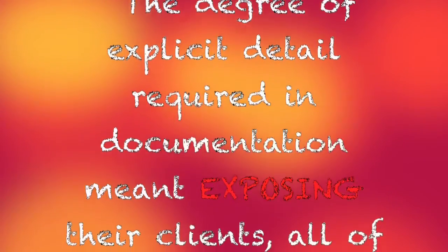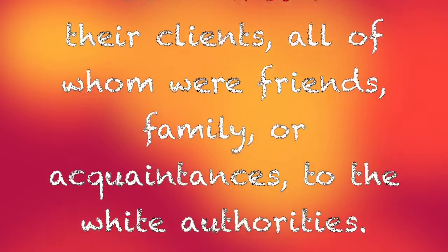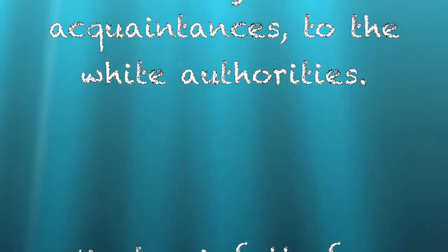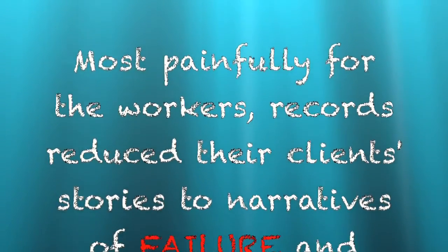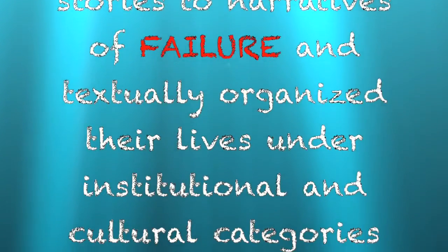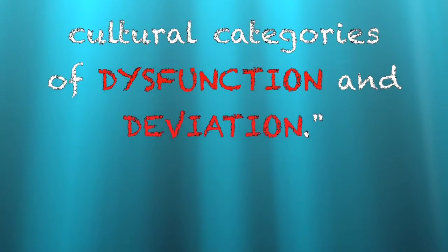These workers were caught between two identities: their role as agents of the state and that of members of a particular oppressed community. Pare explains the degree of explicit detail required in documentation meant exposing their clients — all of whom were friends, family, or acquaintances — to white authorities. Most painfully for the workers, records reduced their clients' stories to narratives of failure and textually organized their lives under institutional and cultural categories of dysfunction and deviation.